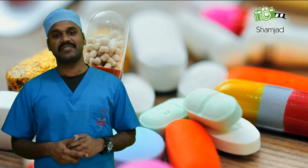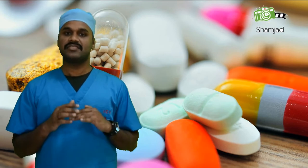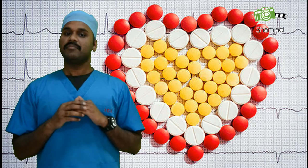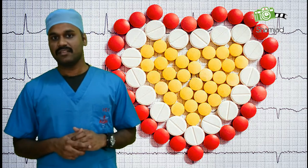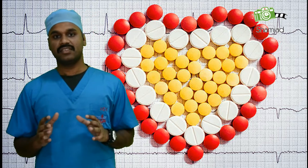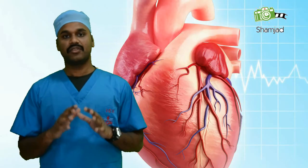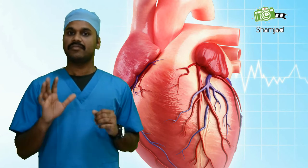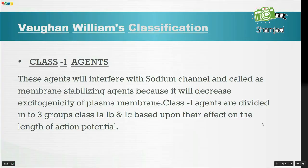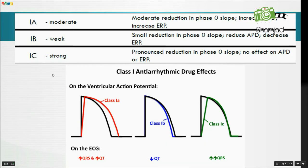Now we will move to drugs and their classification. Anti-arrhythmic drugs include many different drug classes with several types of mechanism of action. There are many types of classification schemes that have been proposed, but today we will discuss the first and widely used Vaughan-Williams drug classification, according to mechanism of action. There are five types of drug classes. Class 1 agents interfere with the sodium channel and are thus called membrane-stabilizing agents, because they decrease the excitability of the cardiac membrane. Class 1 agents are divided into three groups: Class 1A, 1B, and 1C, based upon their effect on the length of action potential.